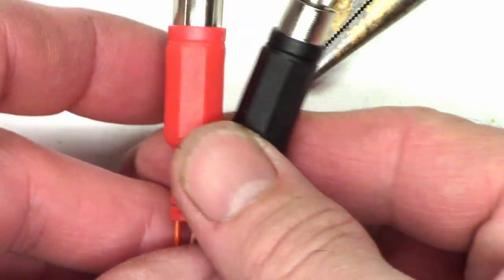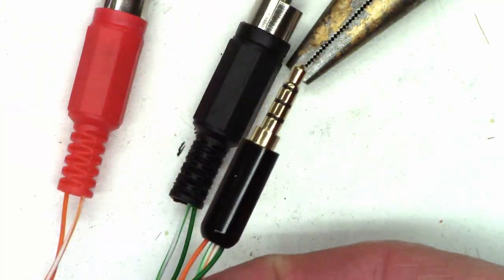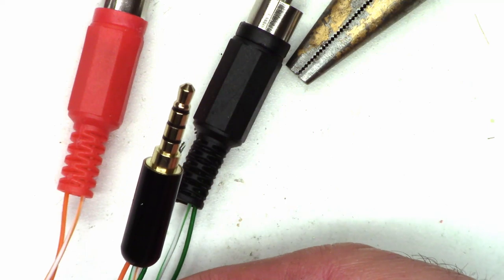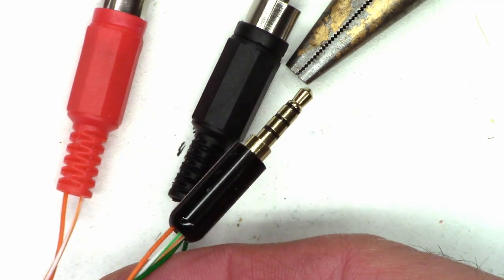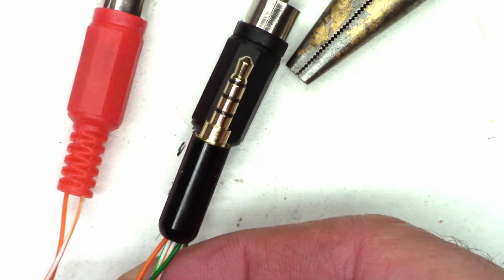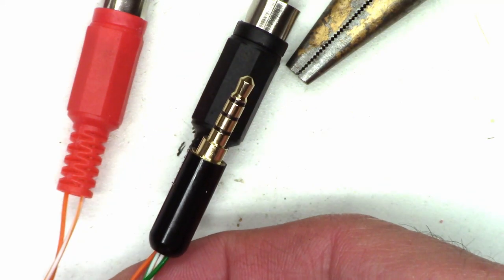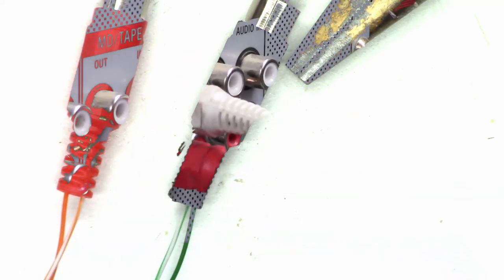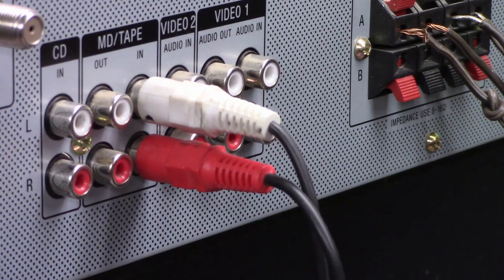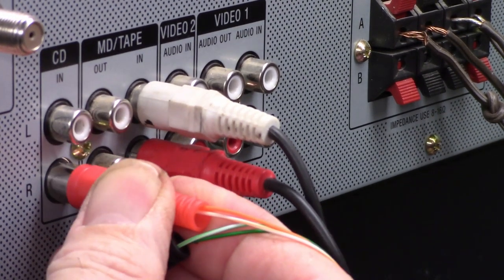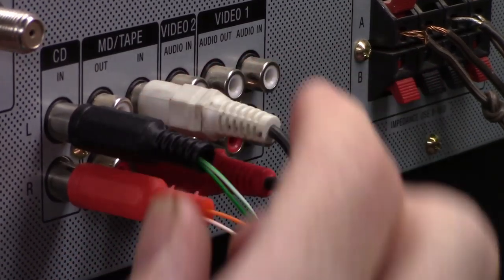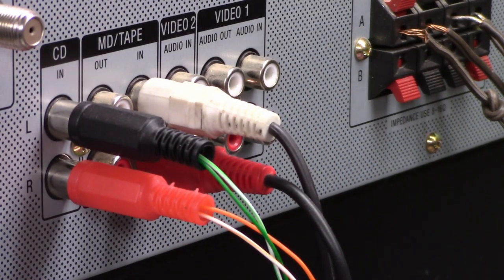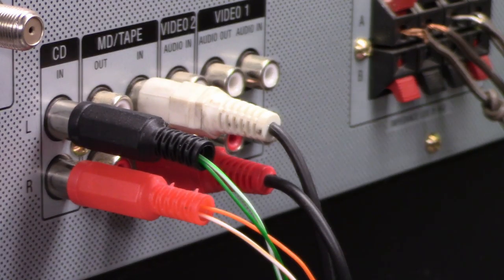So we have our right and our left leads ready to go. And now on the other end we have our eighth inch stereo jack assembly ready to go. So let's go ahead and hook everything up and give it a try. All right. So let's go ahead and plug the cables in now. There's my left and my right going into the CD input back here.